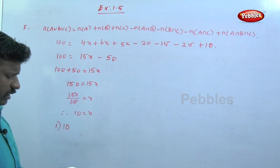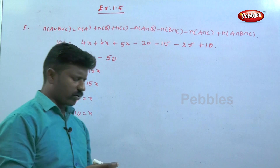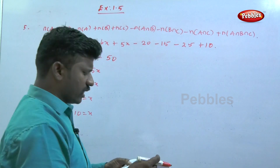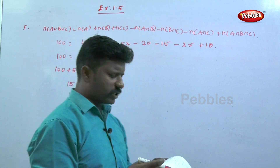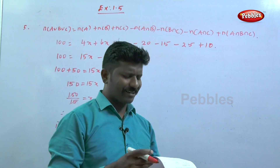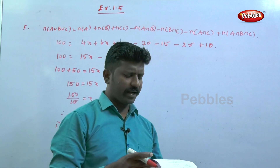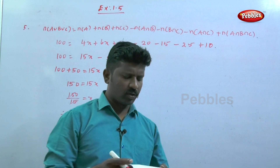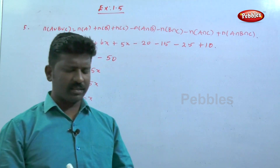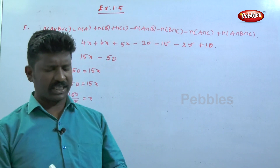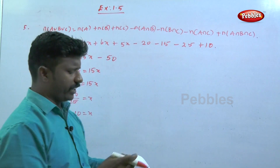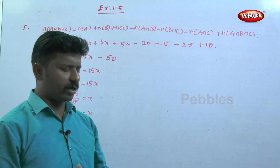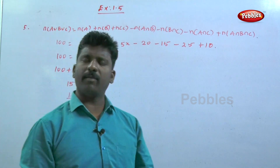The sixth question: for any three sets, (A - B) ∩ (B - C) is equal to the empty set. Using a Venn diagram, there are no common elements between A-B and B-C. Option four is correct.